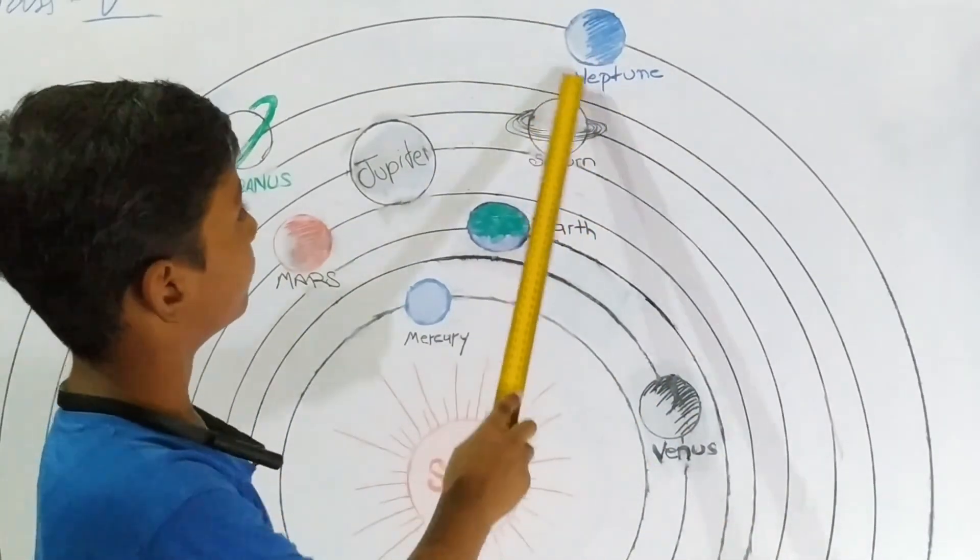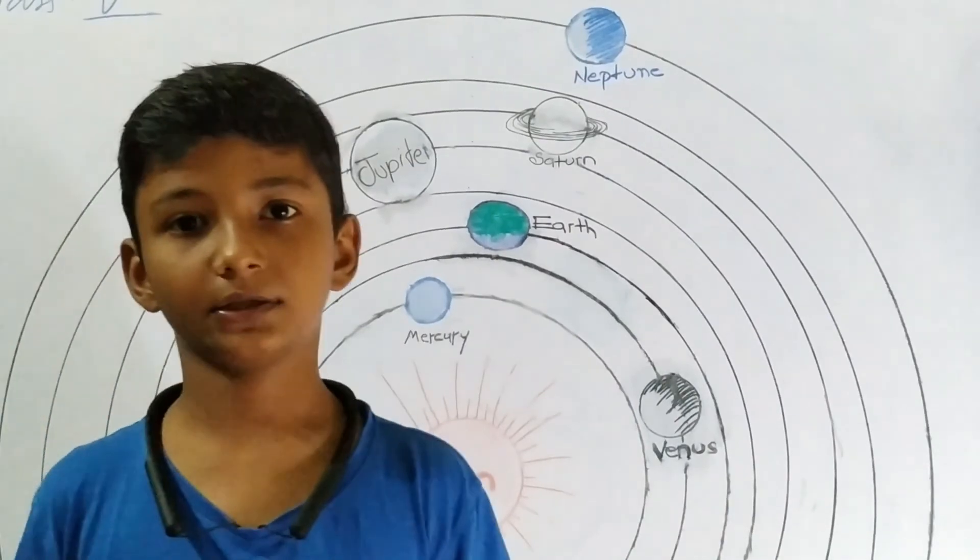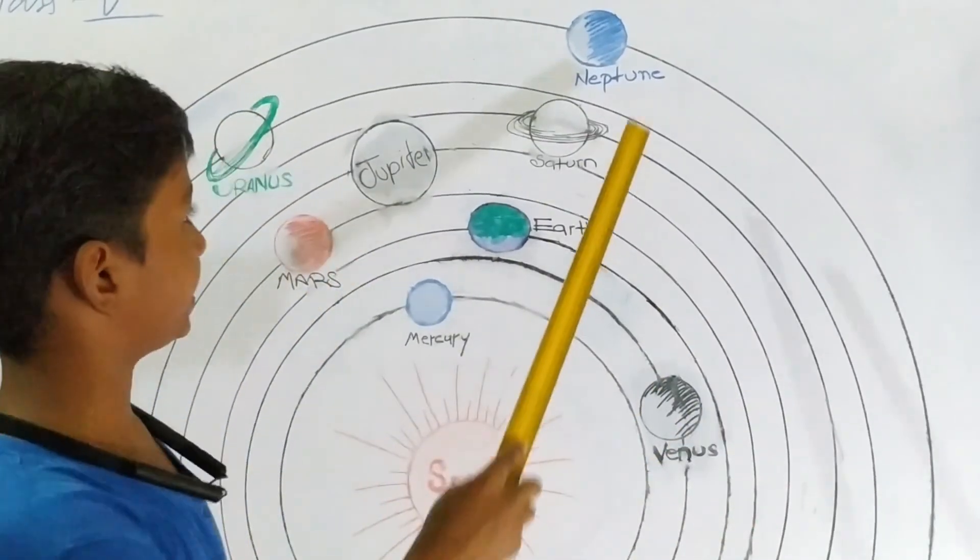It is called the Windy Planet as very strong winds blow on its surface.